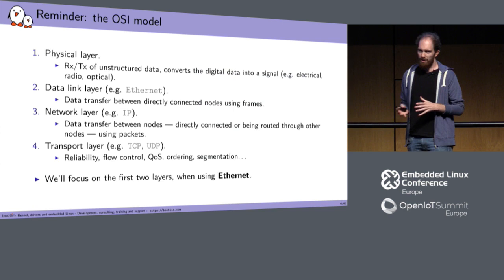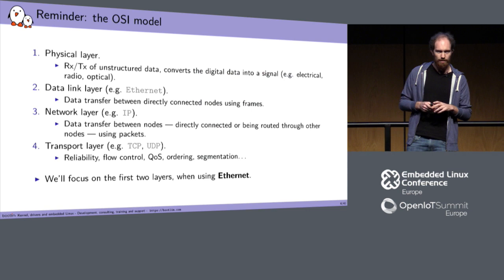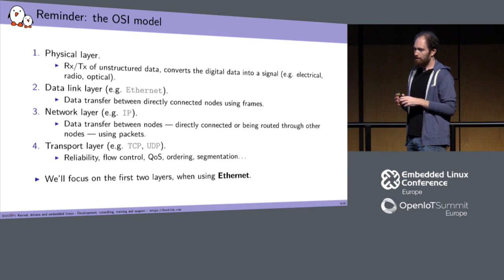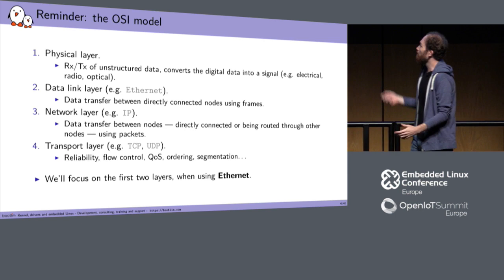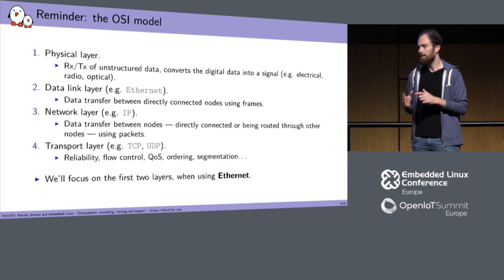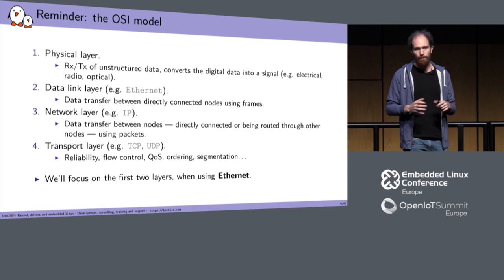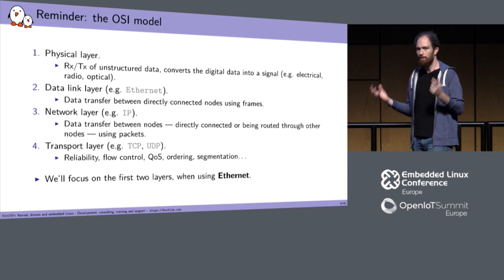To begin with, we need a quick reminder about the OSI model. Looking at the OSI model, which describes the networking stack, you can see many independent levels. The first one is the physical layer, which is responsible for transmitting digital data, converting it into a signal, and transmitting that signal over a medium so that two devices can be connected together.